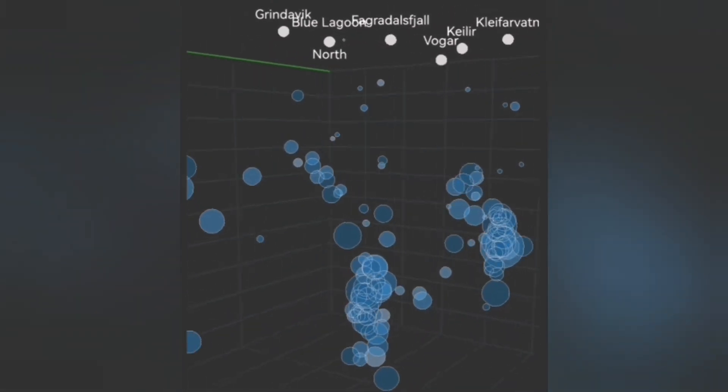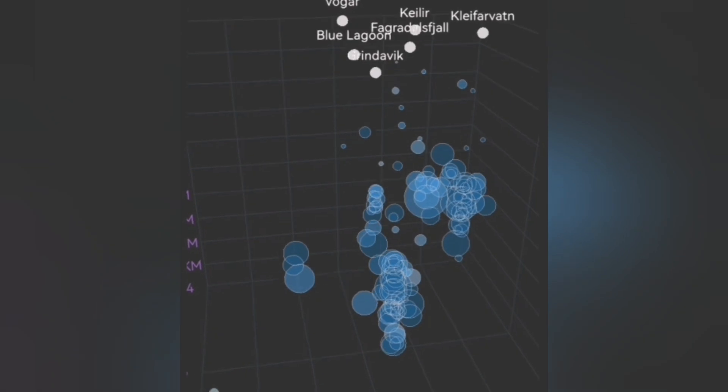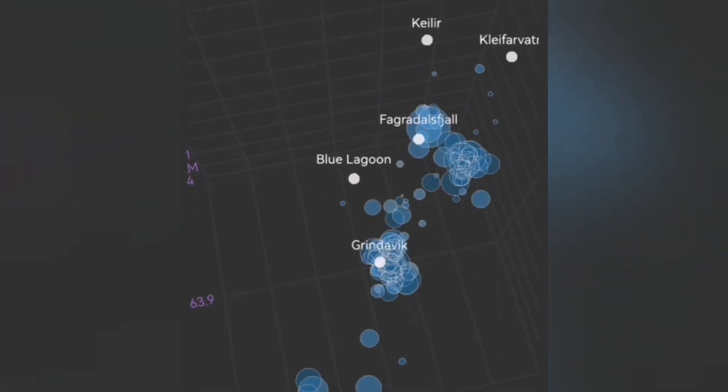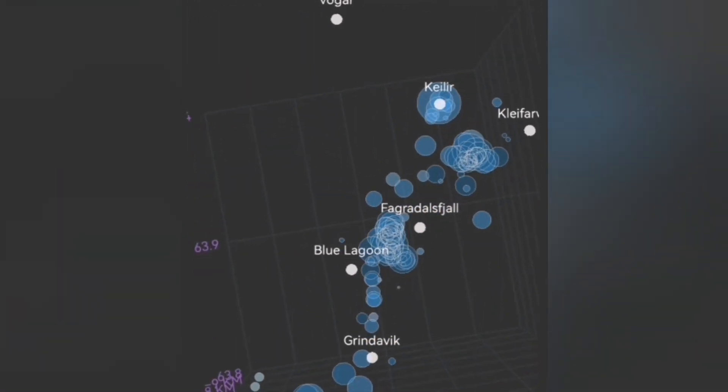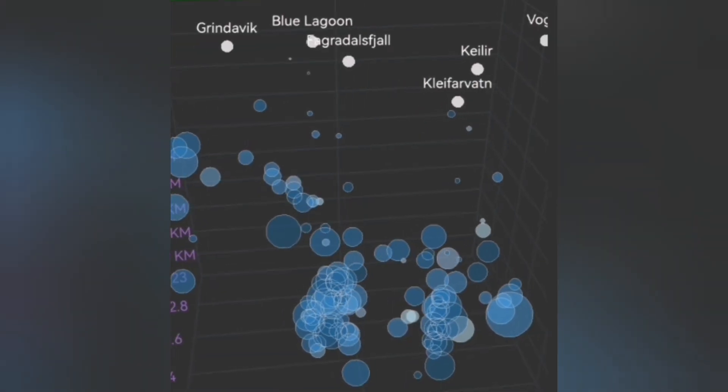You can see at the center the vertical beam of circles rising to the sky. Then from above, you can see that it is moving toward Grindavik.